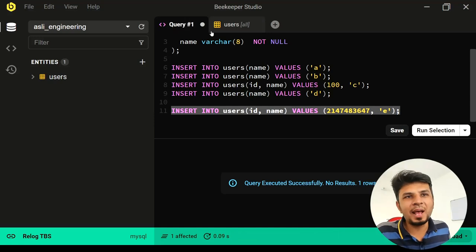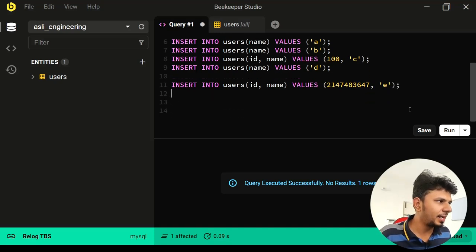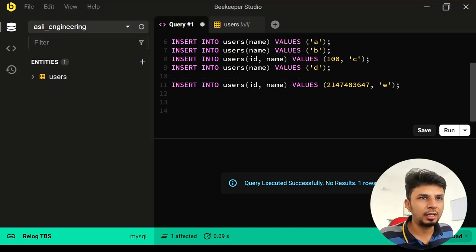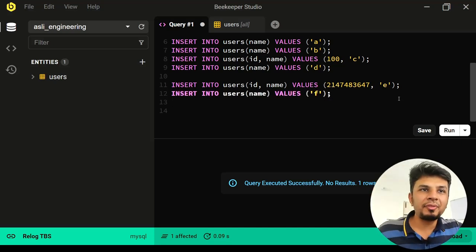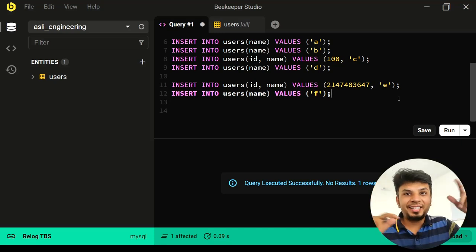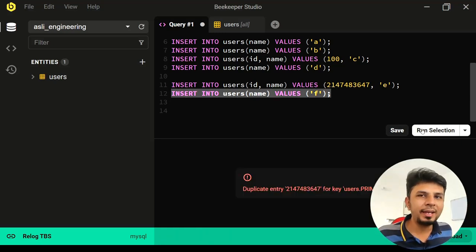Now what would happen if I try to add a new row without specifying the ID, which means the auto-increment should kick in, right? The auto-increment should kick in. Let me insert the user 'f' without specifying any ID. What would happen? Integer limit is already reached. When I try to add something, what would happen? So let's run and see what happens.